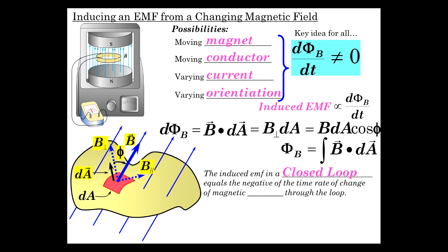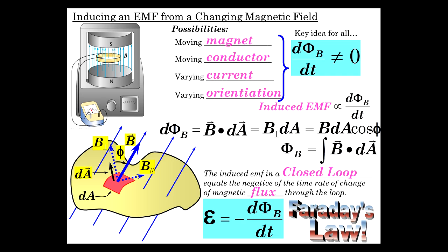The induced EMF in a closed loop equals the negative of the time rate of change of magnetic flux through the loop. That is an important statement. That statement is specified by this equation, which is known as Faraday's Law: EMF induced equals minus dΦ_B/dt.